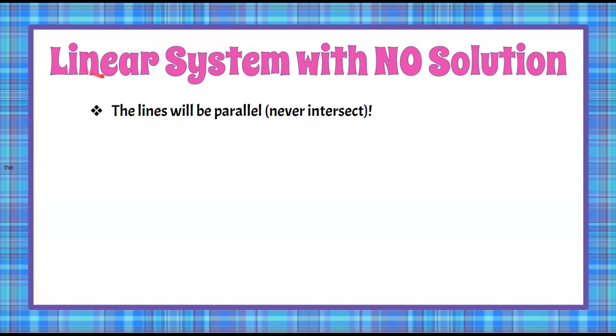When we're talking about a system of linear equations, the point where the two lines intersect is the solution to the system. So when we have no solution, we have parallel lines, and they never intersect. Both lines will have the same slope. We know that lines that have the same slope and different y-intercepts are parallel.